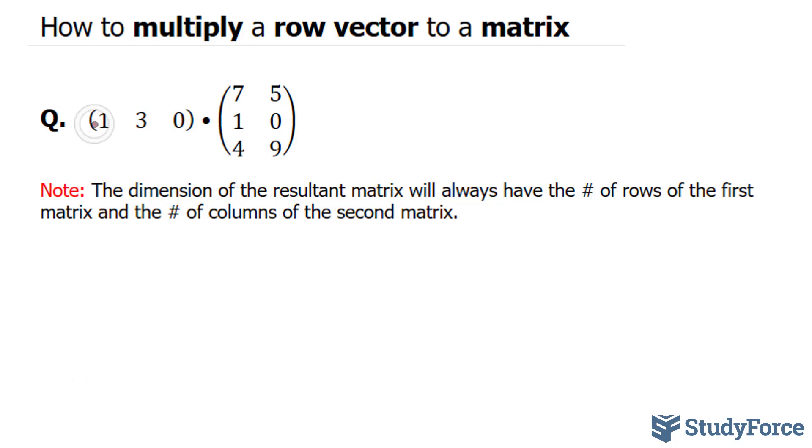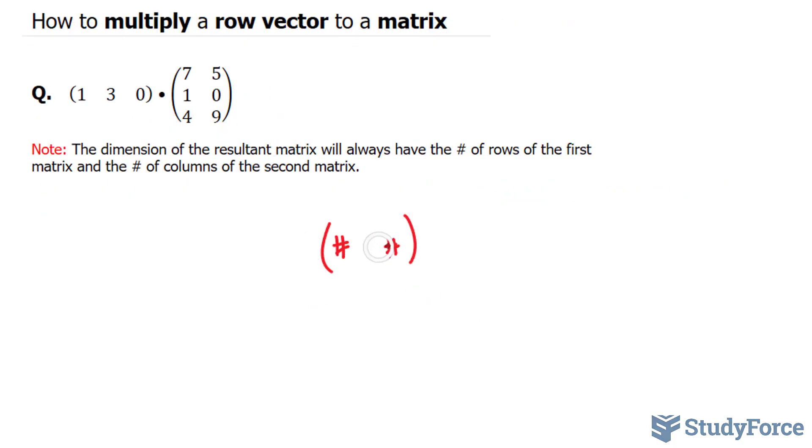Then you do the exact same thing with the second column. So your matrix will be something that looks like this, where we'll have one row and two columns. To find out what this number is,